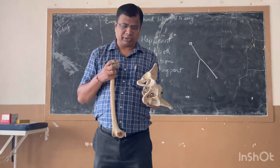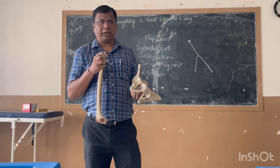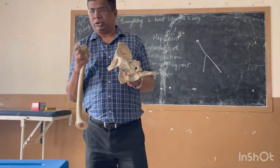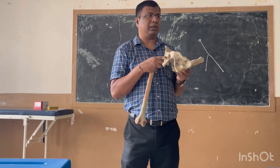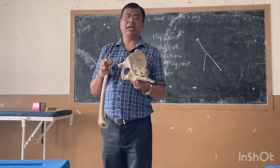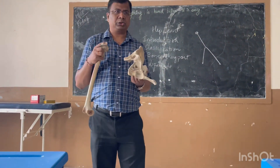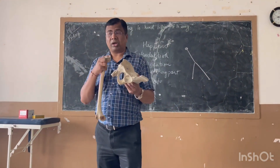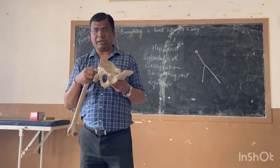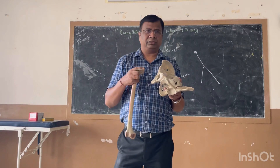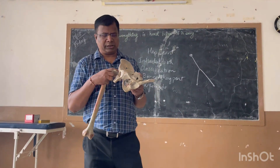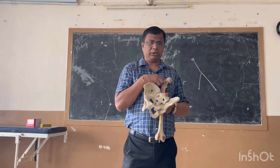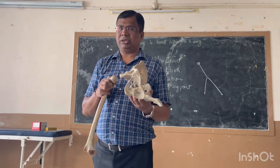The last important ligament is the ligament of the head of the femur, which connects from the fovea capitis — the notch on the head of the femur — to the inside of the acetabulum. It is also called the ligamentum teres, or the round ligament. Its key importance is that epiphyseal arteries travel through this ligament and supply blood to the head of the femur. These arteries also travel through the neck of the femur.